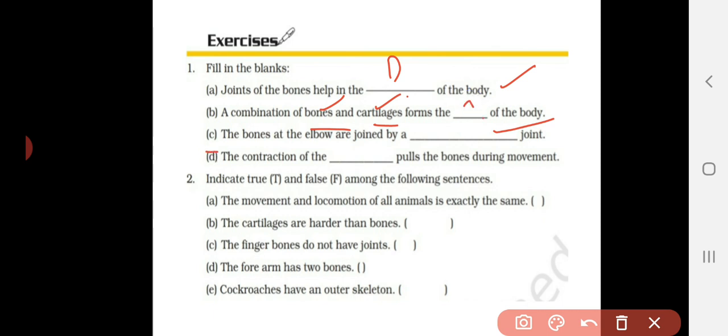Third question: the bones at the elbow are joined by the joint called blank. So the elbow bones are joined by the joint called what kind of joint? We have learned about four types of joints: ball and socket joint, pivotal joint, hinge joint, and fixed joint. So among these four, one is the right answer. Think wisely and write it.